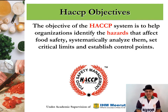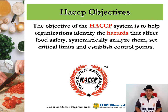The objective of the HACCP system is to help organizations systematically identify the hazards that affect food safety, analyze them, set critical limits, and establish control points. The biggest problem in solving a problem is identifying the problem — once identification is done, the solution is very easy. So the first letter of HACCP is H for hazard. What is a hazard? A hazard is a risk. The first thing you need to do while planning HACCP for your kitchen is to find out what the hazard is.